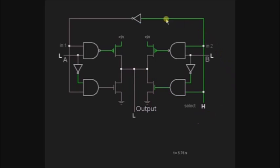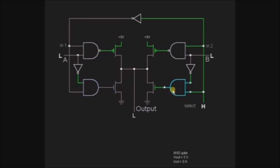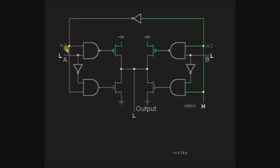This is the circuitry for the multiplexer. We know that these two are the logical gates: NAND and AND. And this is the NOT gate. A selection line is given for both the inputs — this is for the B input and this is for the A input.